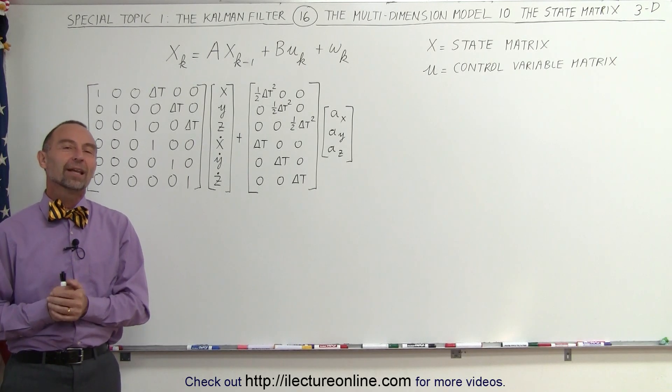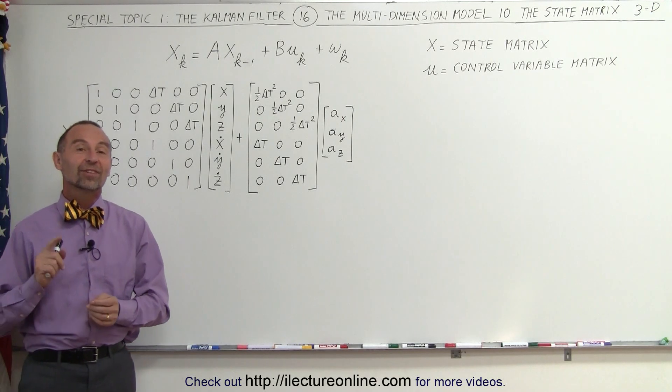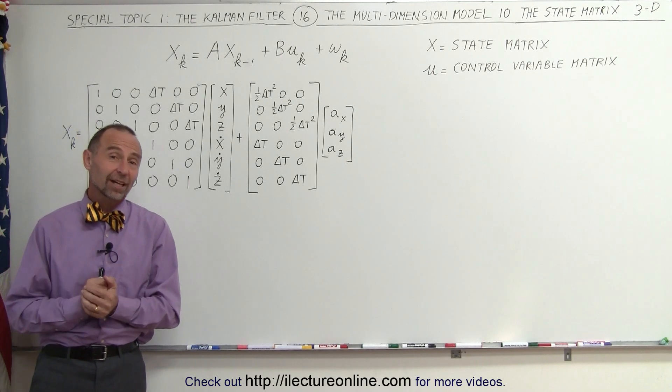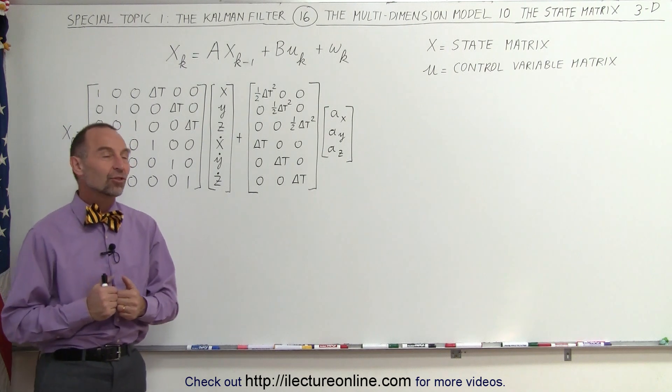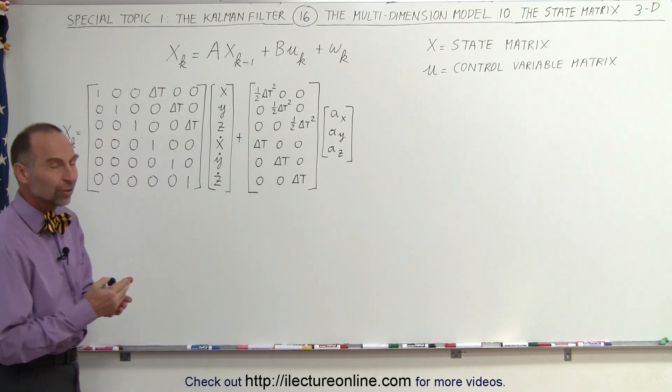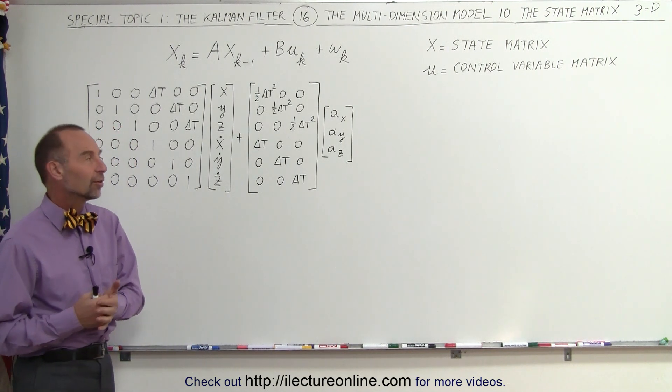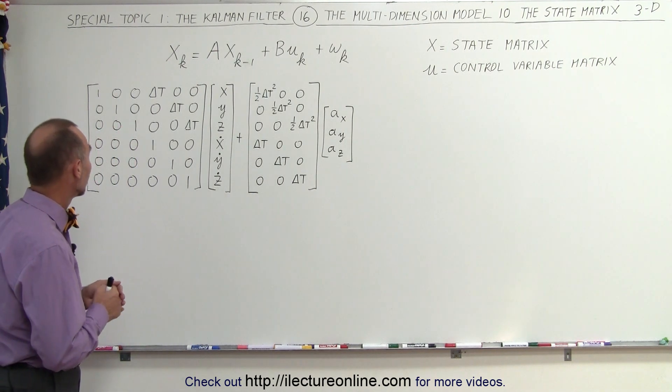Welcome to ElectronLine. Now let's see what the state matrix looks like when we do this in three dimensions: the x, the y, and the z dimension.